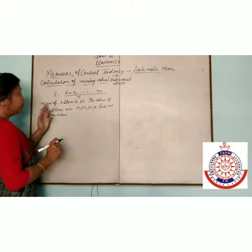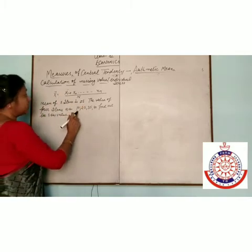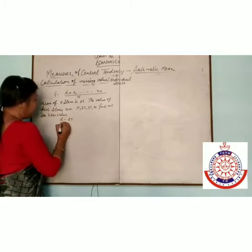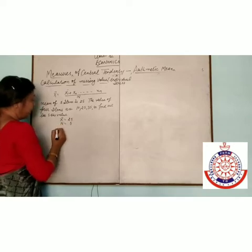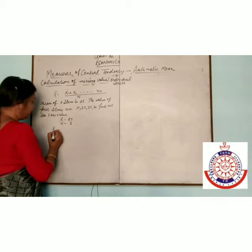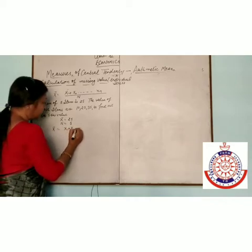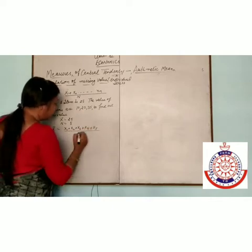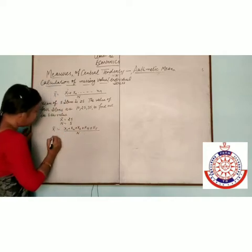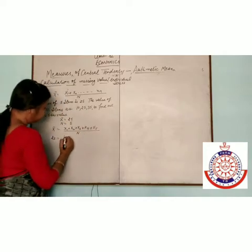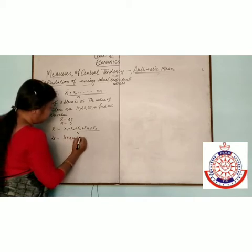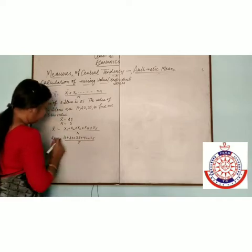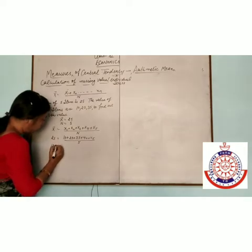Here, x1, x2, x3, and x4 are given, and x̄ = 25, n = 5. Using the formula: x̄ = (x1 + x2 + x3 + x4 + x5) / 5, so 5 × 25 = 125.